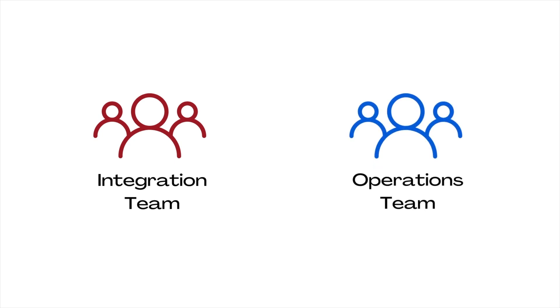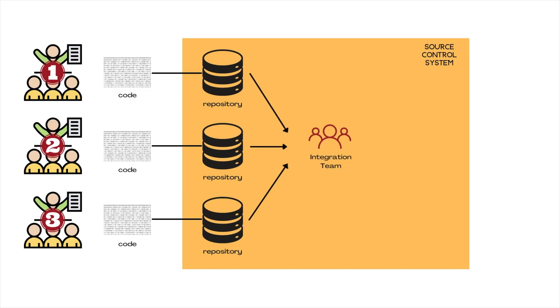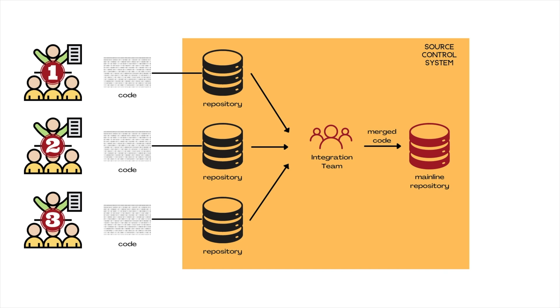Besides the three scrum teams, EasySoft also has a dedicated integration team and a dedicated operations team. The integration team owns the working and maintenance of the source control system, and is responsible for merging — also called integrating — all of the work from the three teams into one codebase. They do this once at the end of each sprint. The integrated code is stored in a separate folder called the mainline repository within the source control system.